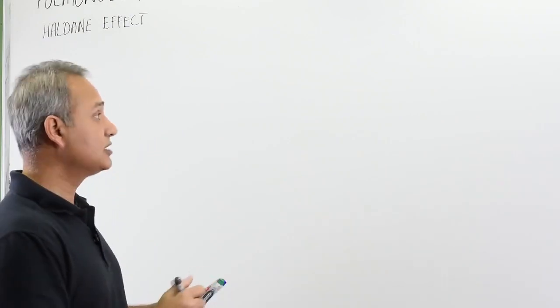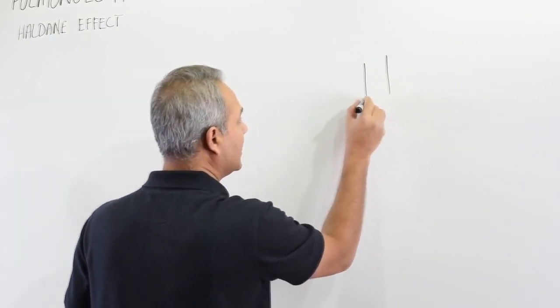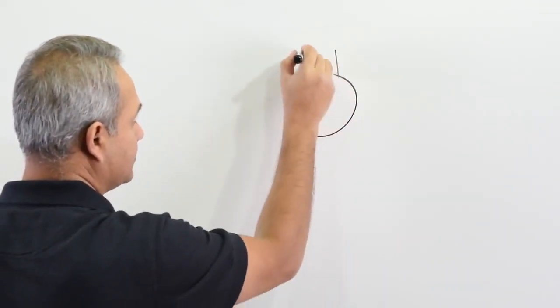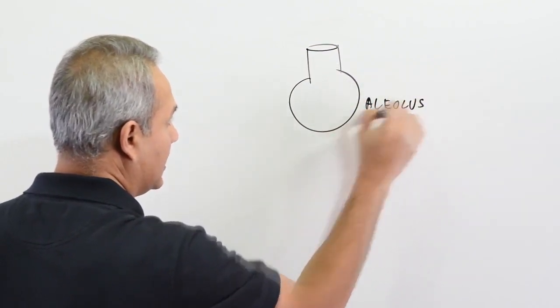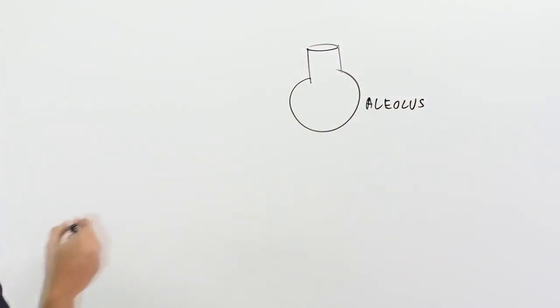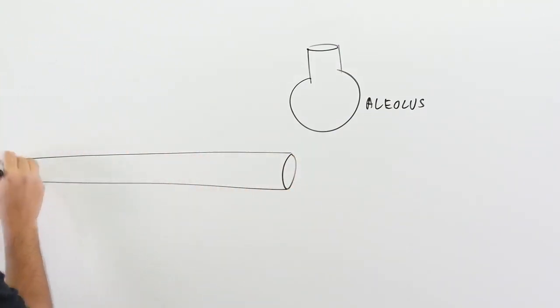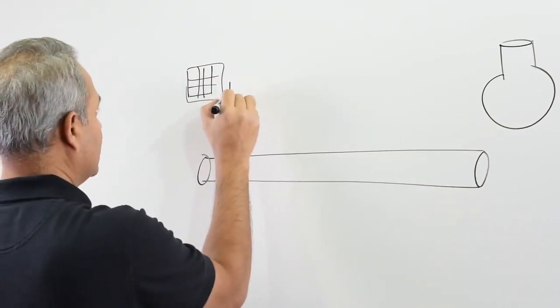So that is called the Haldane effect. It is the reverse of the Bohr effect. Let us look at how this happens. Here is an alveolus. This is lungs. Let's say we have a blood vessel.